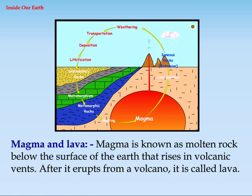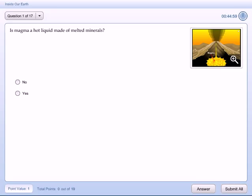Magma and lava: magma is known as molten rock below the surface of the earth that rises in volcanic vents. After it erupts from a volcano, it is called lava.